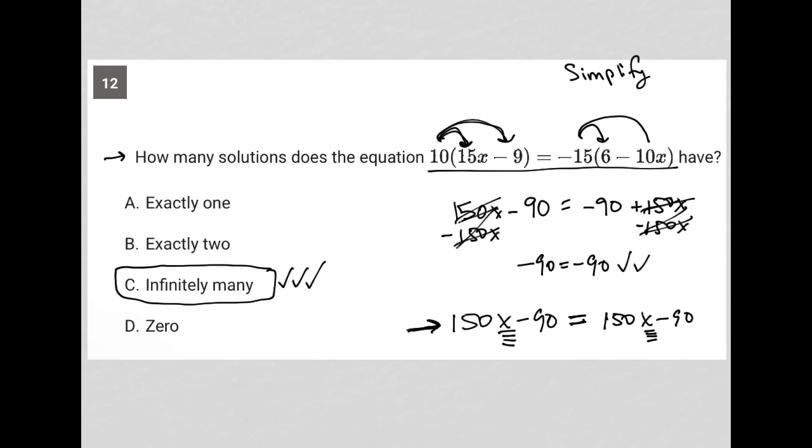So whether you understood the simplification way, where we're crossing out the x terms and saying what's left over is a true statement, and because of that is why we say infinitely many solutions, or if it's just logical understanding of the fact that these two things on left and right are literally saying the same thing, that's how we get there.